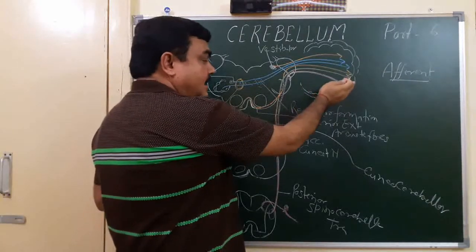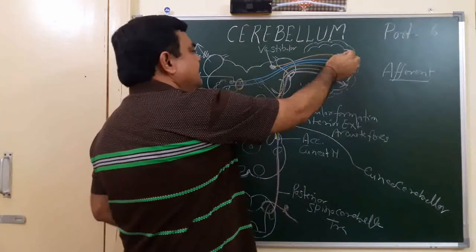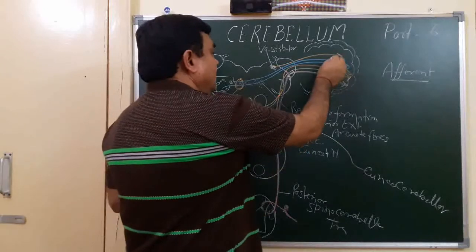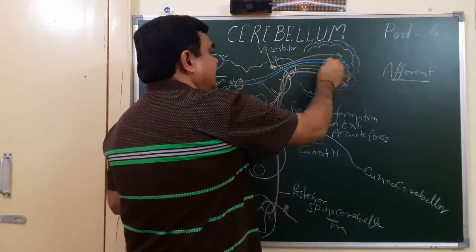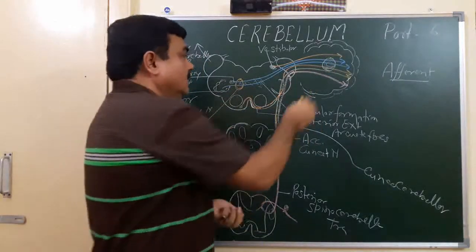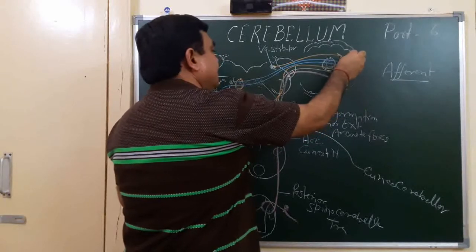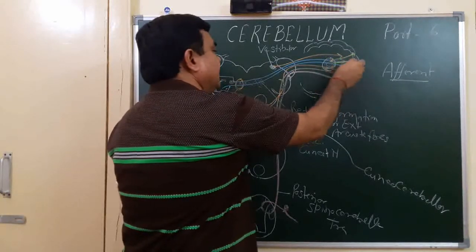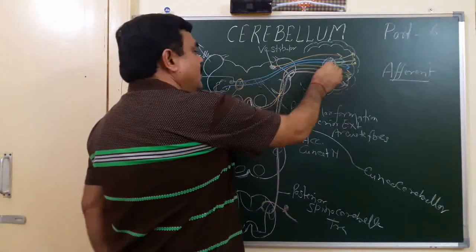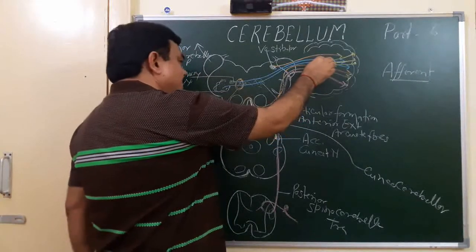These fibers go to the cerebellar cortex and granule cells, then synapse to the Purkinje cells. Then, in the deep core of the cerebellum, the nuclei are present. From the Purkinje cells, fibers come to the nuclei, and from these nuclei, efferents emerge.